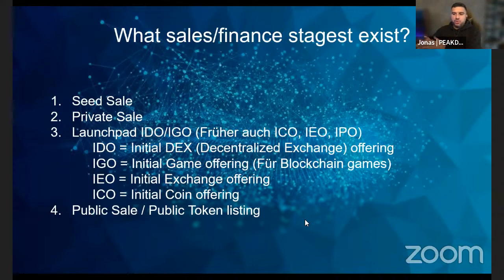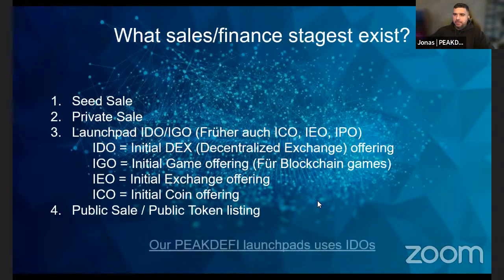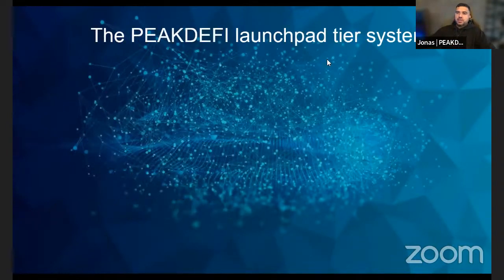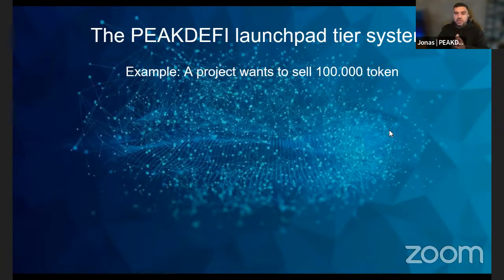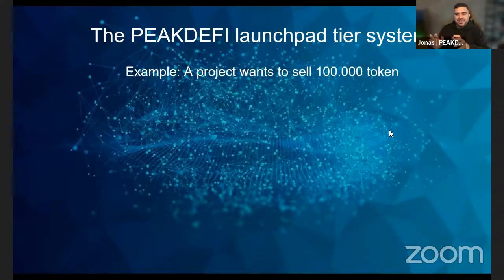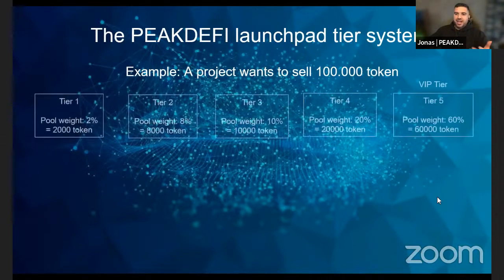Our Peak DeFi Launchpad uses IDOs. When we talk about projects on our launchpad, we talk about IDOs. The Peak DeFi Launchpad has a tier system containing five different tier levels, and we have a guaranteed allocation — so it doesn't matter which tier you are in, you will always get a spot. Let me visualize the idea of a launchpad and how a tier system works.